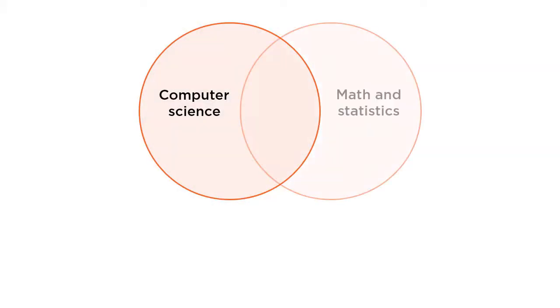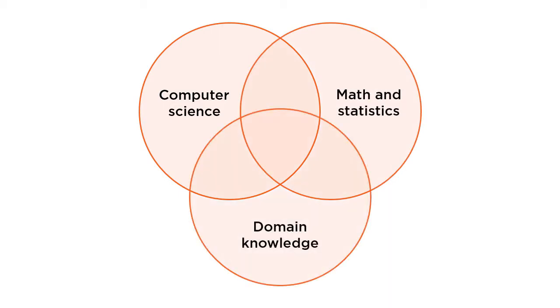Data science is an interdisciplinary field composed of computer science, math and statistics, and domain knowledge that seeks to derive insight from data. Data science is the intersection of these three respective disciplines.